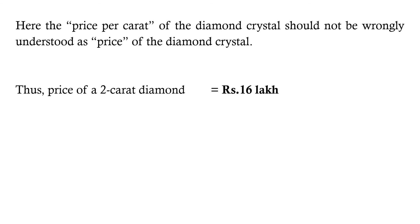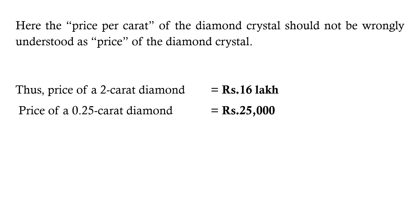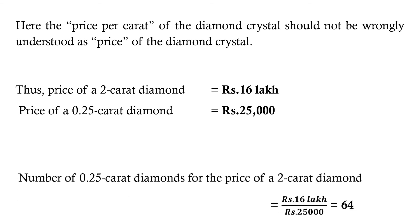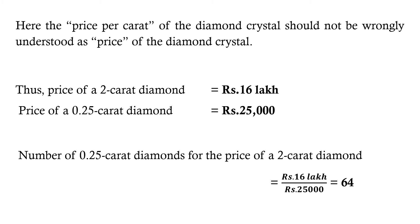Thus, the price of a 2 carat diamond equals Rs. 16 lakh, and the price of a 0.25 carat diamond equals Rs. 25,000. Therefore, the number of 0.25 carat diamonds purchasable for the price of a 2 carat diamond equals Rs. 16 lakh divided by Rs. 25,000, which equals 64.